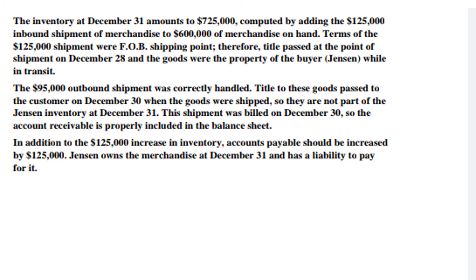We will report $725,000 as inventory. This $725,000 includes the actual merchandise value of $600,000, plus the inbound shipment of $125,000. Because the terms were FOB shipping point, when the shipment is loaded onto the carrier, title transfers to the buyer. Therefore, we include the $125,000 inbound merchandise in our inventory value.